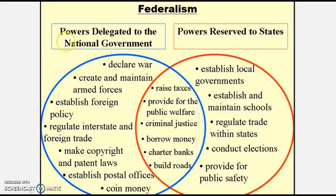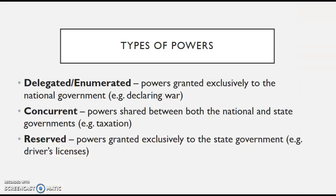You also have concurrent powers — powers shared by both the national and the state governments. Both the national and state governments raise taxes, so your state might have an income tax or a sales tax. These are powers shared by both levels of government.